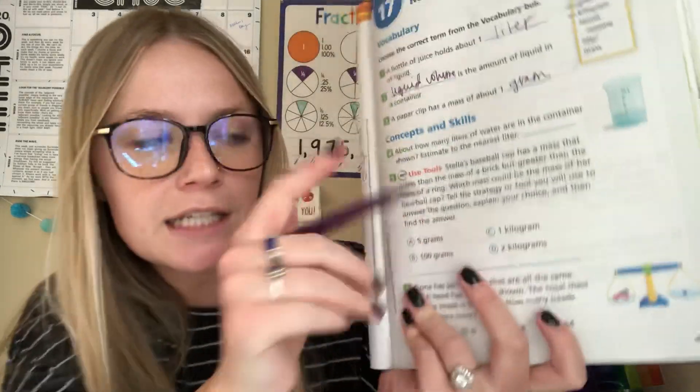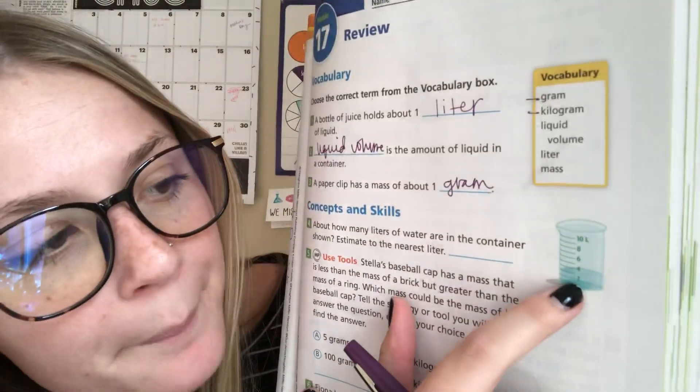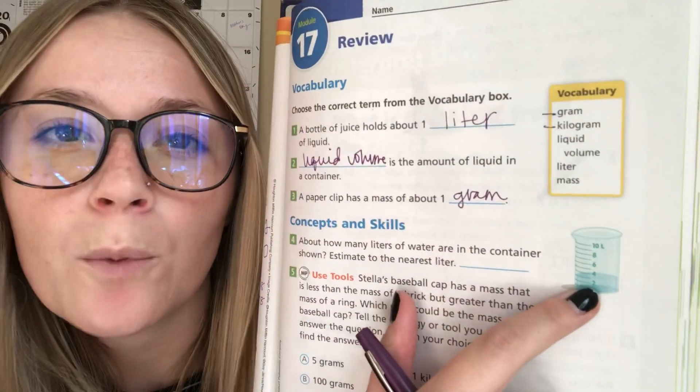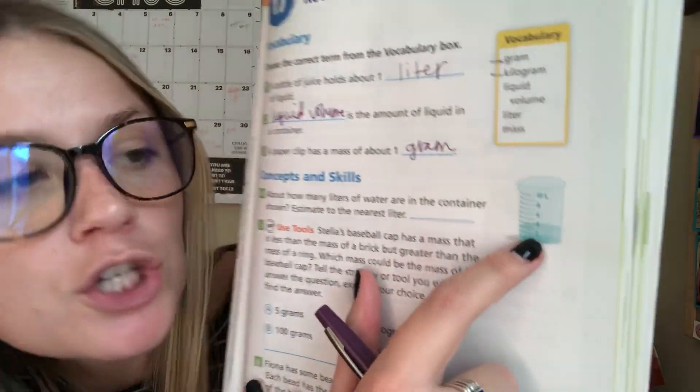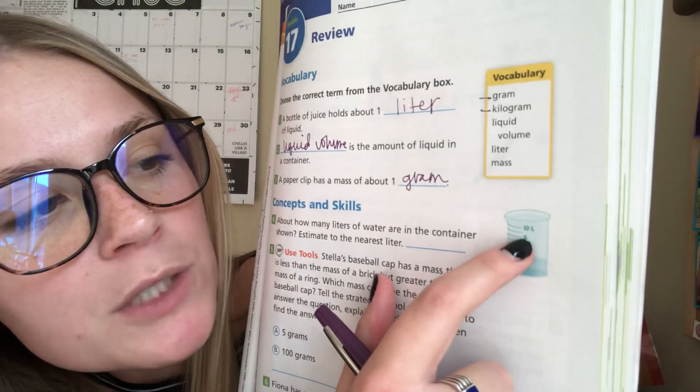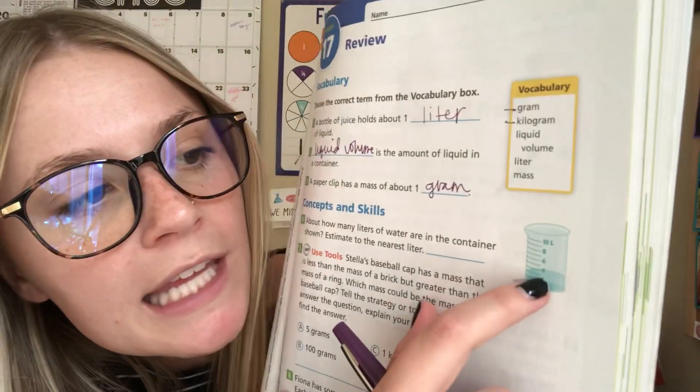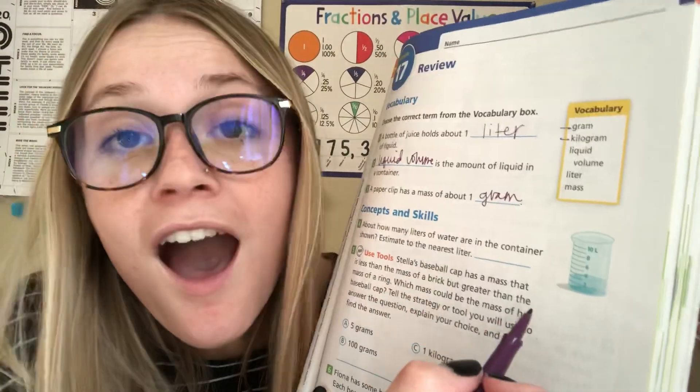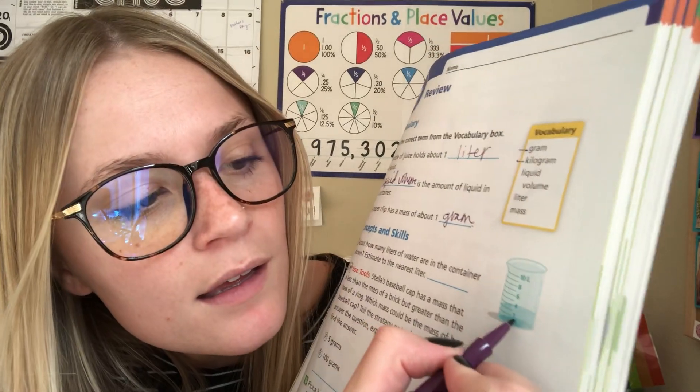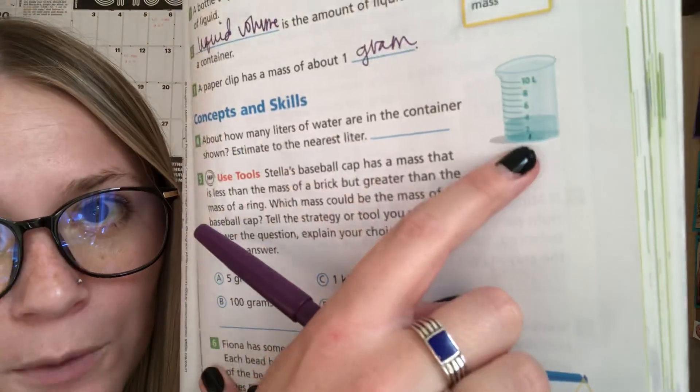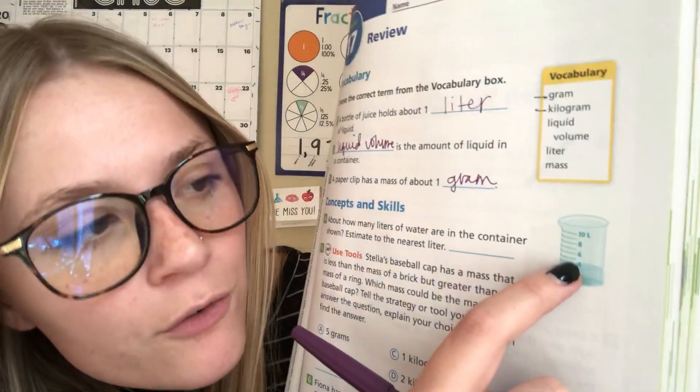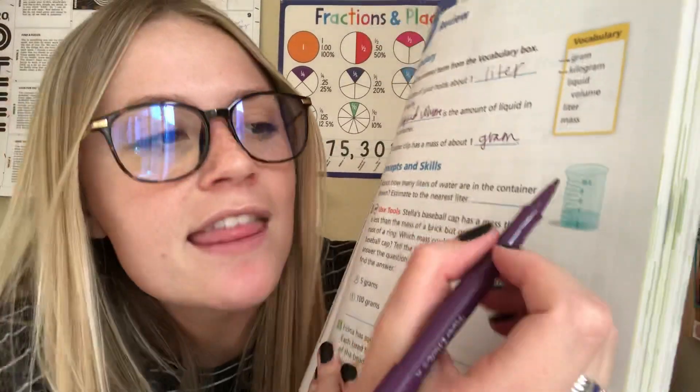Number four, concepts and skills. About how many liters of water are in the container shown? Estimate to the nearest liter. So if we look at our container, the bottom number usually tells us what we're counting by. That first number is a two. So you can see that we're counting by twos and we're skipping every line. So what do we think is in between each even number? That will be an odd number. So we have one, I just wrote a little one at the bottom, two, three, four, five, six, seven, eight, nine, and then all the way up to ten.